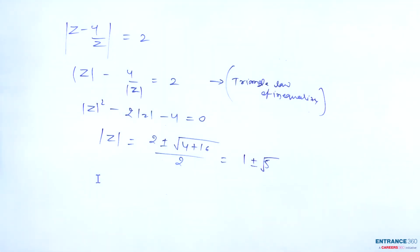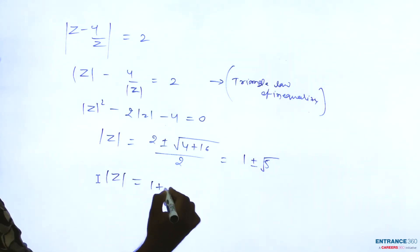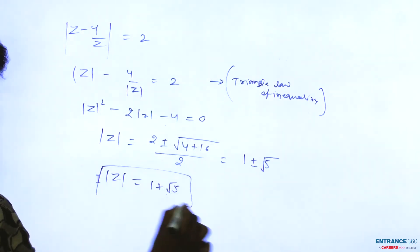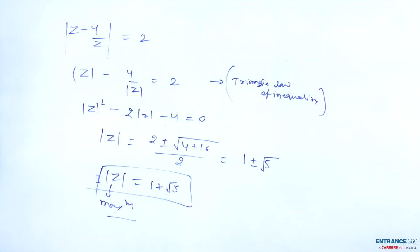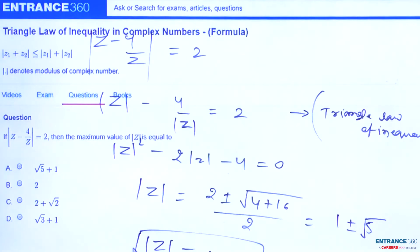According to this question we have to find the maximum value of mod z, which is 1 plus root 5. You can see the option 1 plus root 5, so option A should be the correct option.